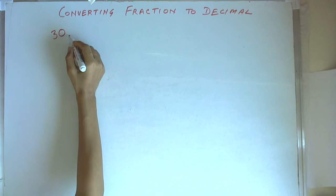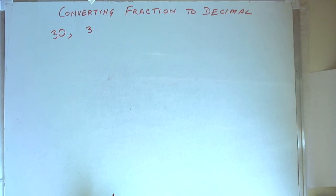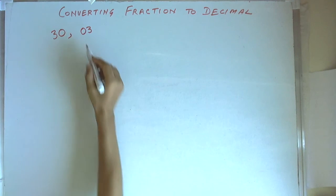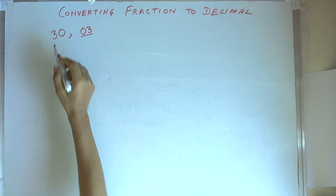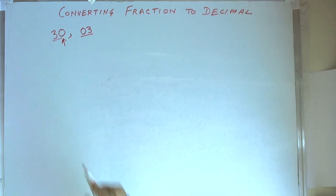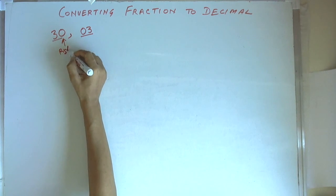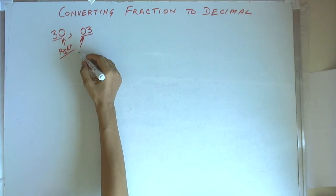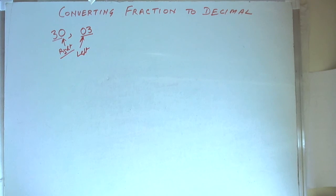However, if we have a number 3 and if we write a 0 on the left side, then it is 03. So, if we put a 0 on the right hand side, the value changes. If we put the 0 on the left side, then no change in value. So, what does this mean?